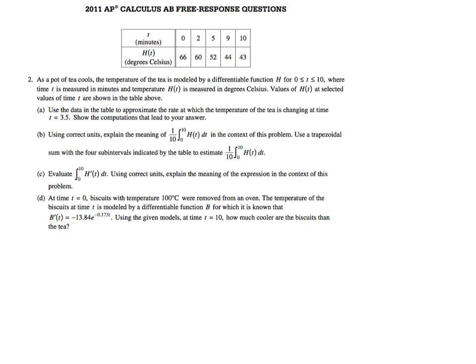In the first question, in part A, it says use the data in the table to approximate - approximate is the key word here - approximate the rate at which the temperature of the tea is changing at time T equals 3.5. Show the computations that lead to your answer. The key is where it says approximate the rate. When we're approximating the rate, all they're looking for is the slope, which is a rate of change between two points.